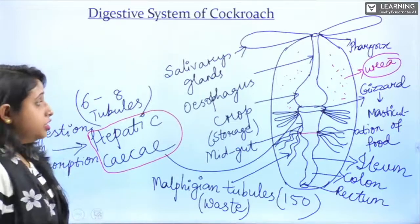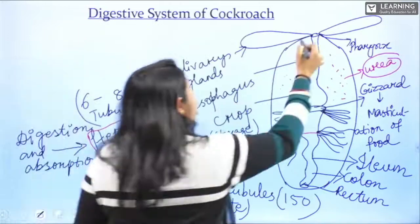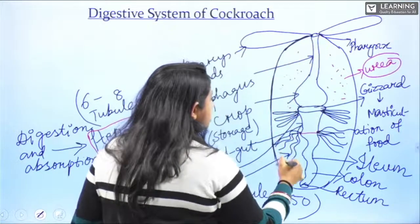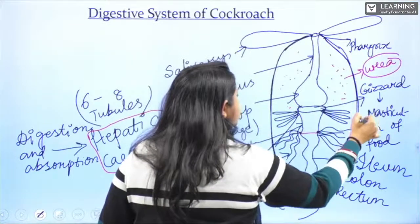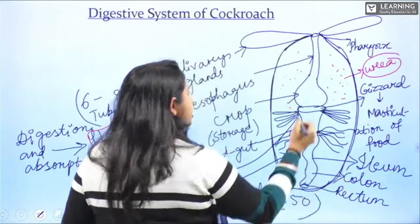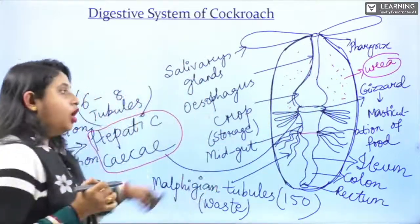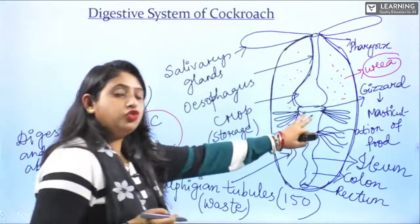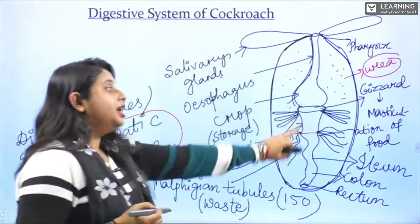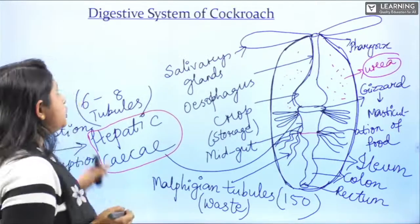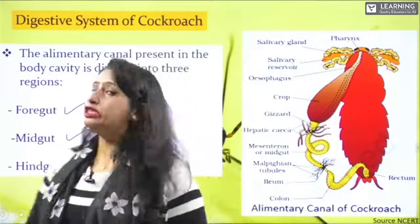The outer layer of the body everywhere is covered with chitin, except the midgut. Even the alimentary canal is covered with chitin, but in the midgut, chitin is absent. As you can see in the NCERT picture, the Malpighian tubules are responsible for removing waste materials from the body.